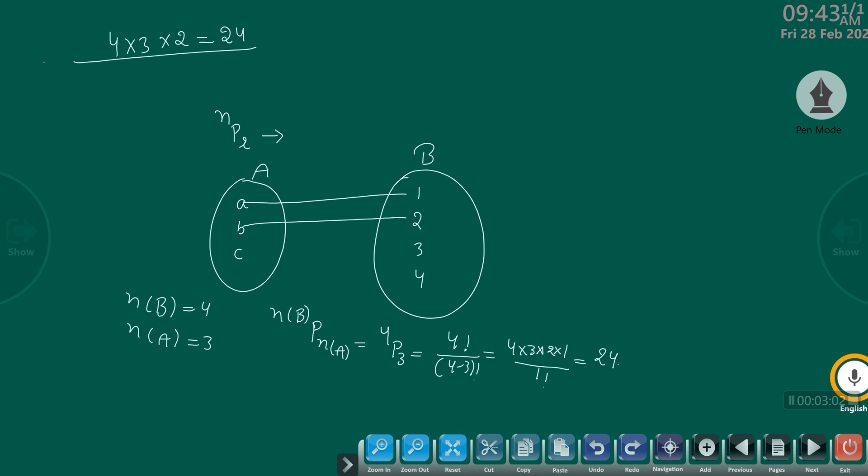So if you have number of elements in set B permutation with number of elements in A, that gives the total possible one-to-one functions you can make. Clear? Yesterday you had doubt about this formula. You were telling me there will be a combination. Combination we use when we have to make choice, when we have to select things. When we have to arrange things, then we use permutations.